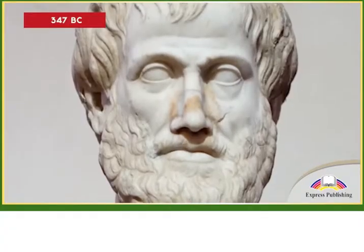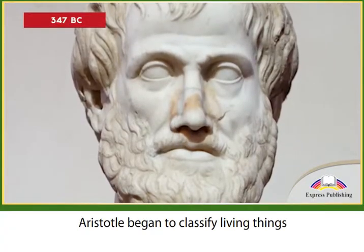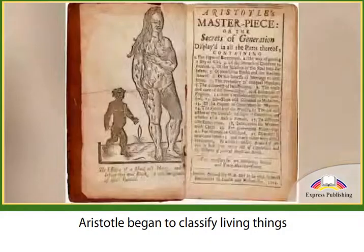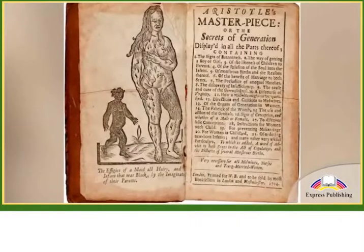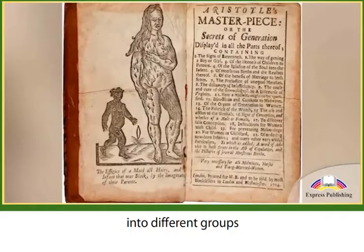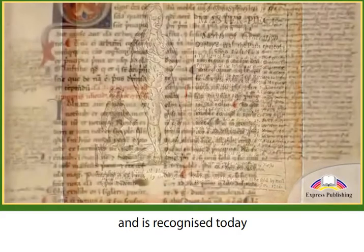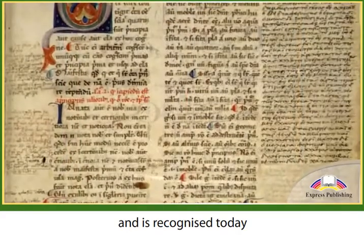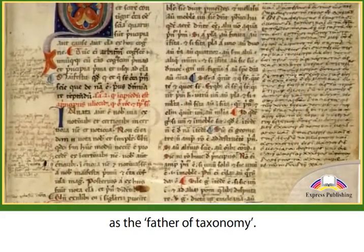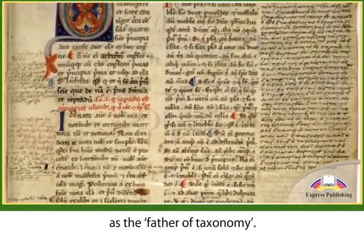347 BC: Aristotle began to classify living things into different groups and is recognized today as the father of taxonomy.